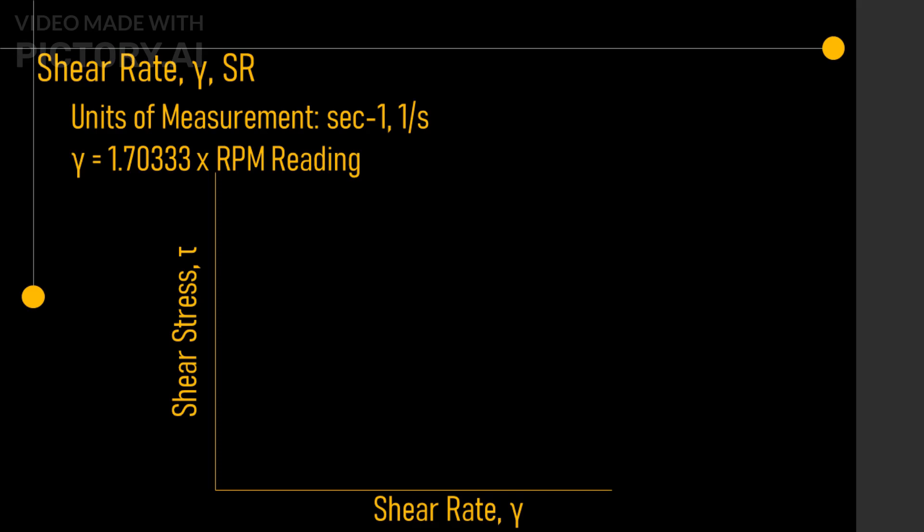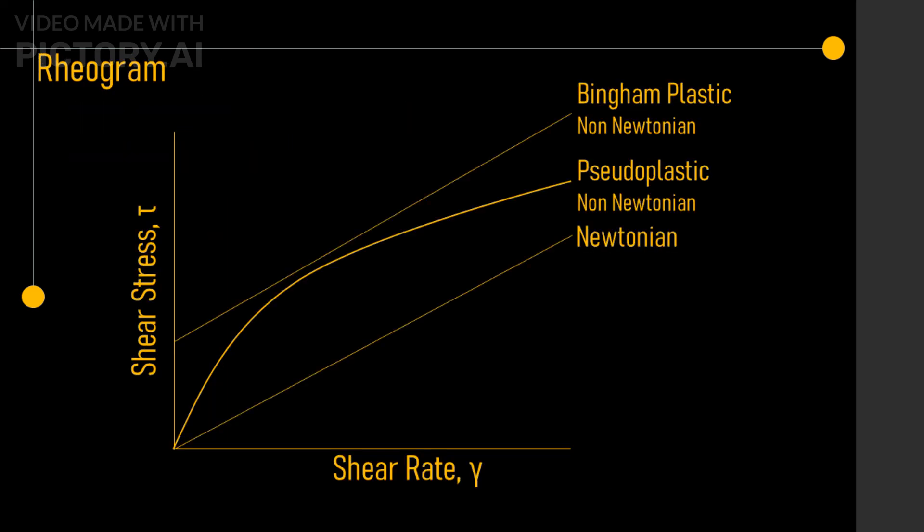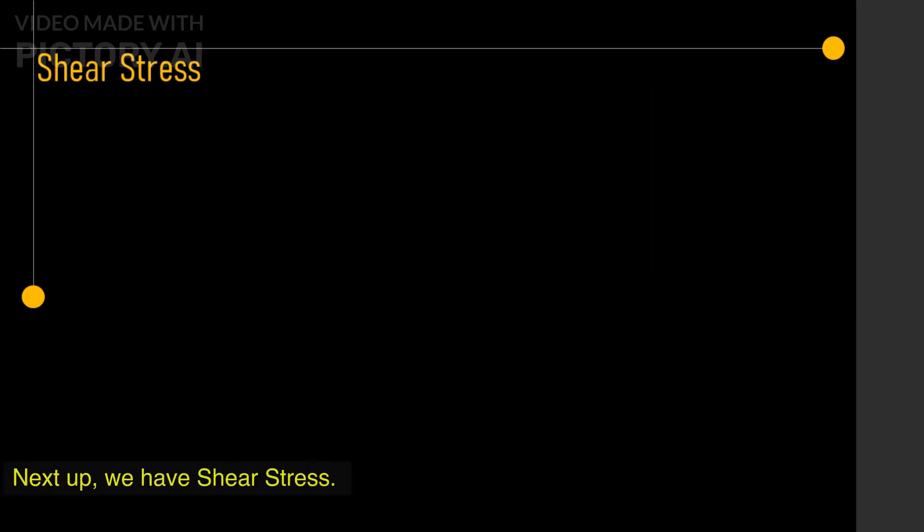Then, we have shear rate. This is a crucial parameter in drilling fluid hydraulics that describes how fast a fluid is flowing in a pipe or channel. It determines the viscosity of the fluid, which affects the pressure and power required to pump the fluid through a pipe. So, the faster the fluid is flowing, the thinner or thicker it can become.